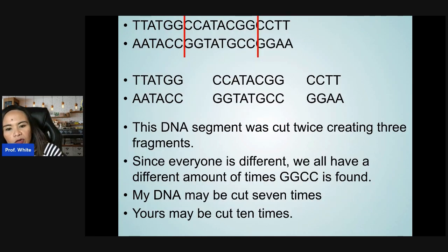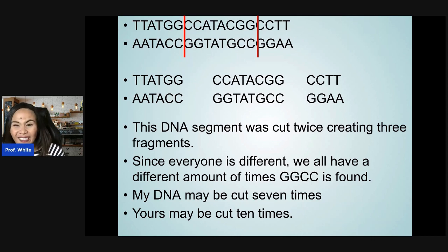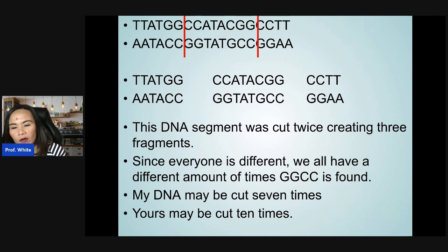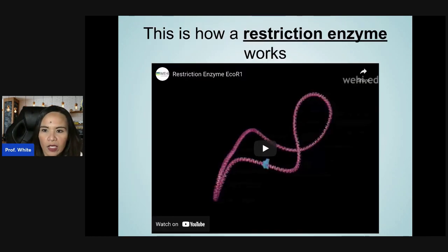Every time the restriction enzyme cuts between G and C, the DNA sequence is cut, creating fragments. Since everyone is different, we all have a different number of times GGCC appears in our DNA — my DNA might be cut seven times and yours ten times. That's what restriction enzymes do.